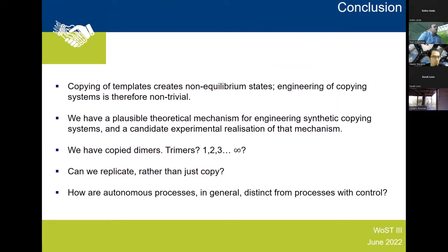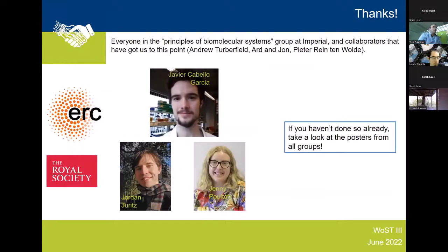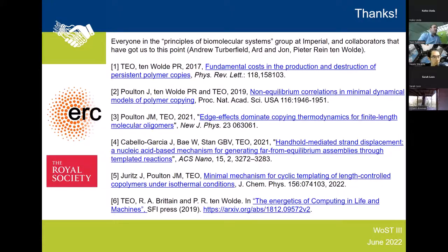In conclusion: copying of templates creates non-equilibrium states and therefore engineering copying systems is non-trivial. We think we have a theoretical mechanism for doing so, and a candidate experimental realization that works for dimers. The next step is trimers and then, as a physicist: one, two, three, four... infinity — can we do something of arbitrary length? Thank you to Javi, Jordi, and Jenny who did the original work, and please do visit their posters at this conference.